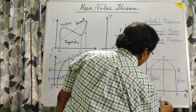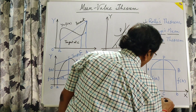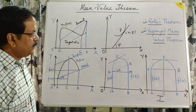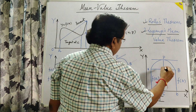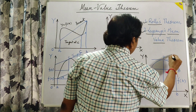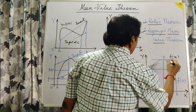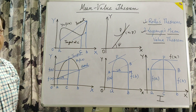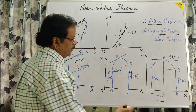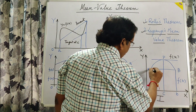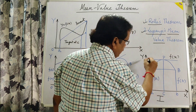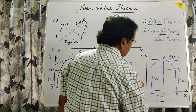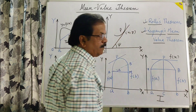First of all, Rolle delivered this. In this you can see, if there is a curve f(x), and in this curve there are two endpoints A and B, in such a way that the Y coordinates — that is the ordinates — are equal: f(A) is equal to f(B).